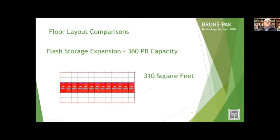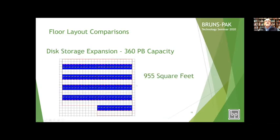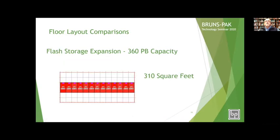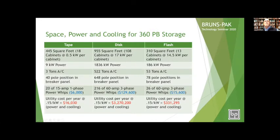For flash at 360 petabytes, it's down to 310 square feet and 13 racks. You can see a huge difference in space. As with the 40 petabyte comparison, tape and disk dominate — but at this scale, flash actually takes up less room than the tape solution.